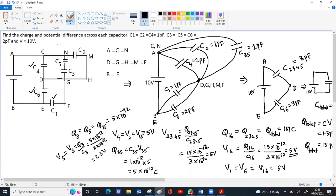So V3, V5, V1, V6, V2, V4, all the voltages we got. Q3 we got, Q5 we got. Q1, Q6, all you can find because we have the voltages. So Q1 will be C1 V1. Q1 is 1 picofarad. V1 is 5. So 1 into 5. This is 5 picocoulomb.